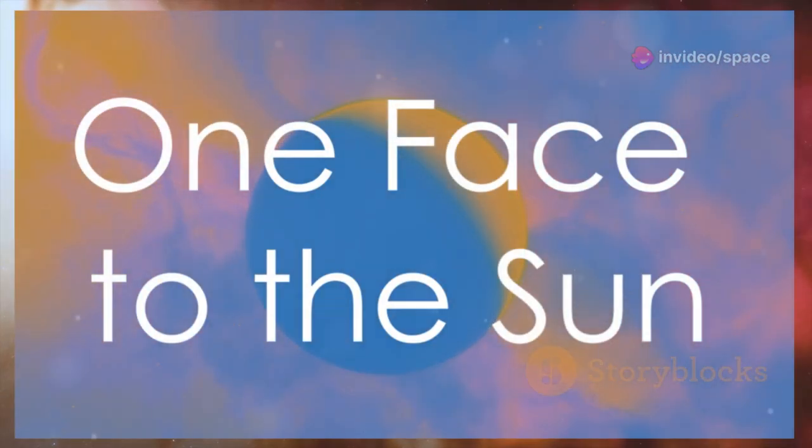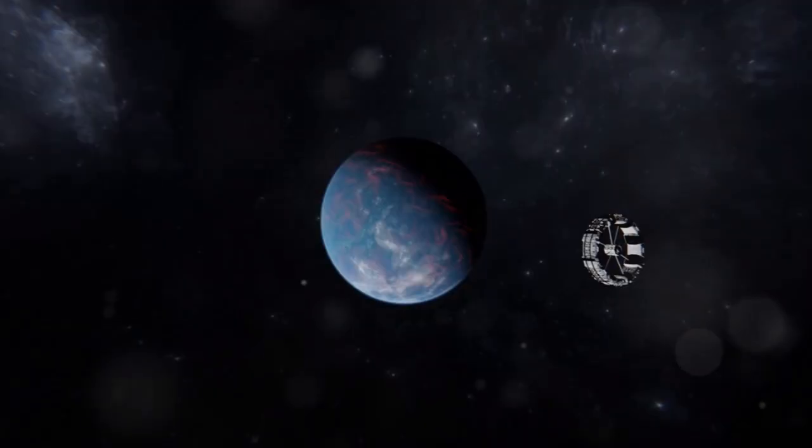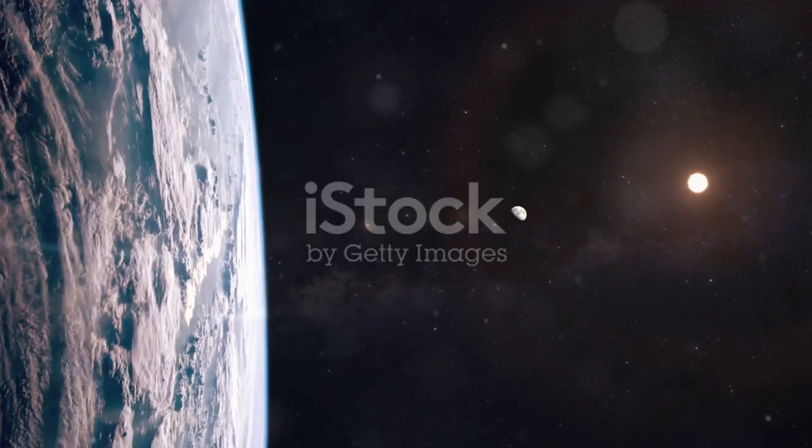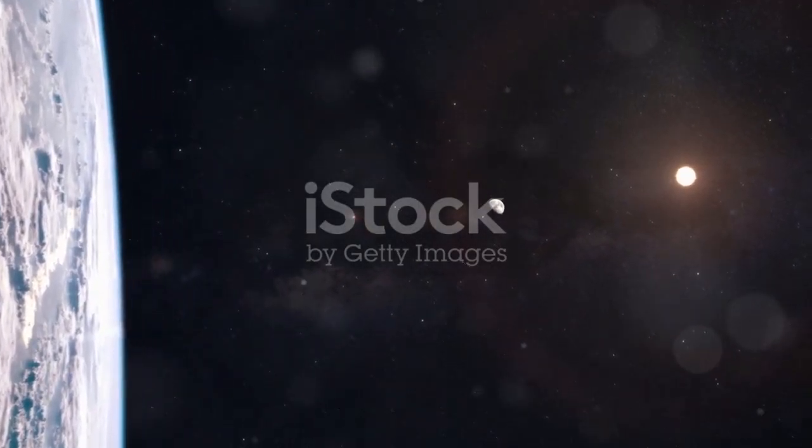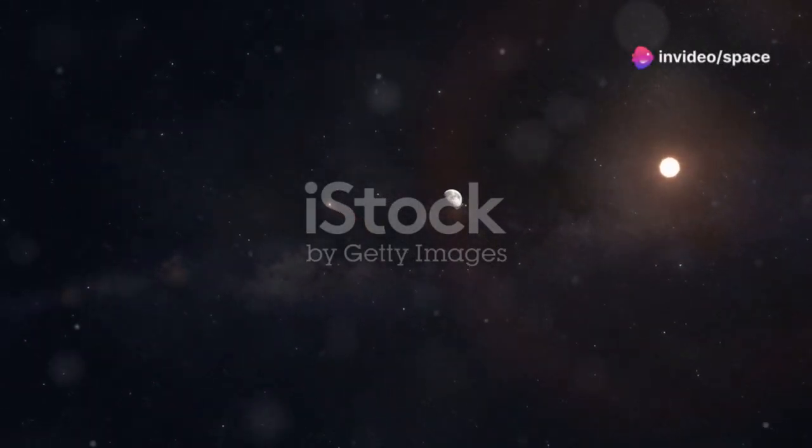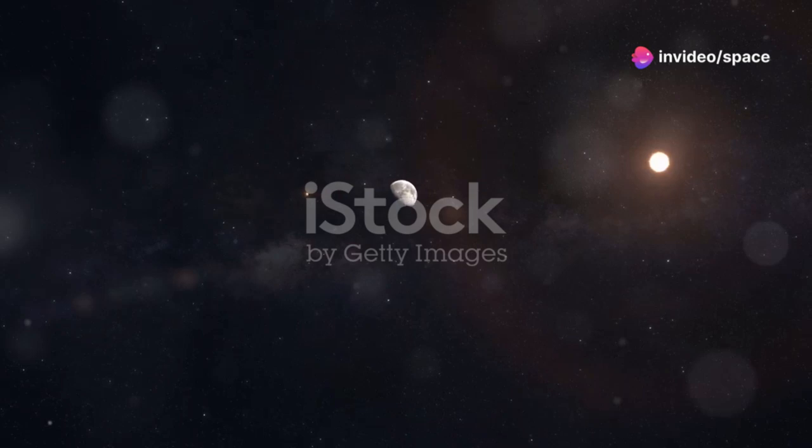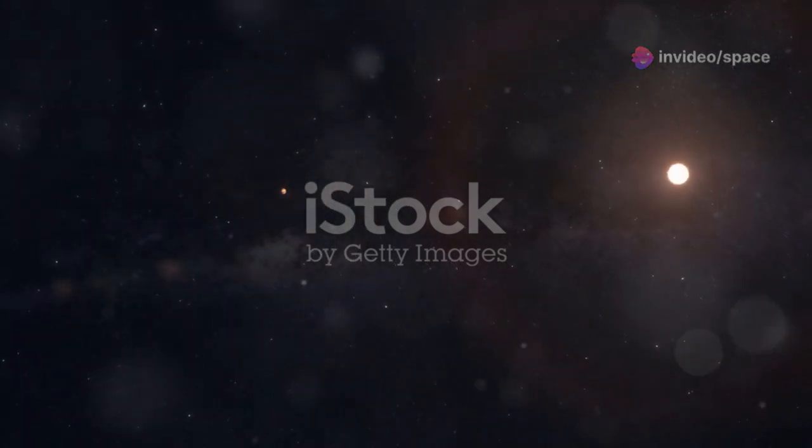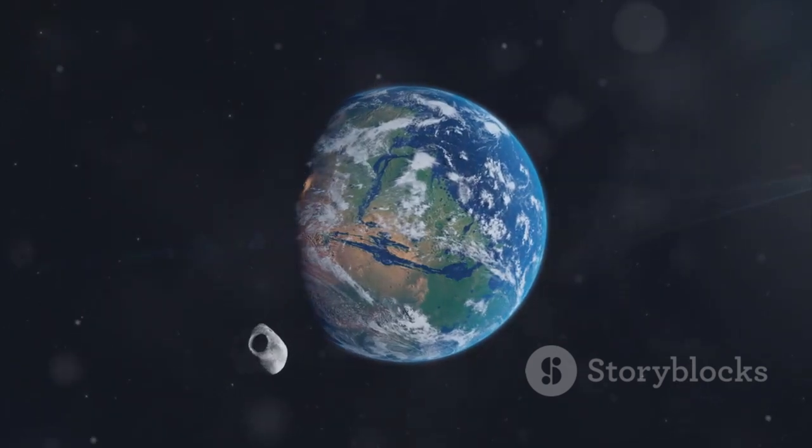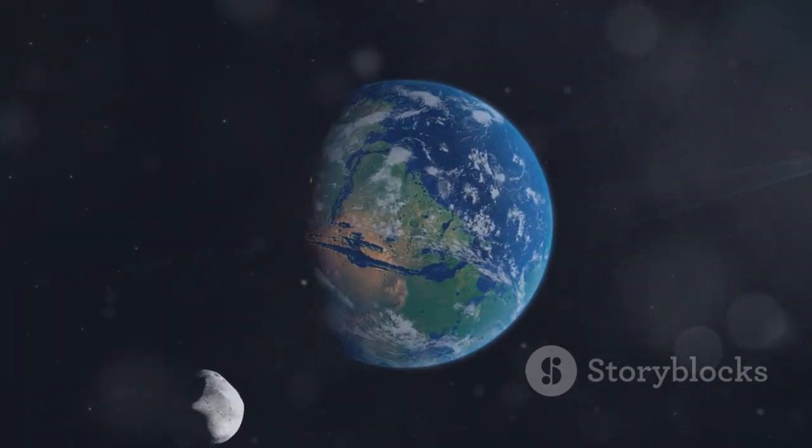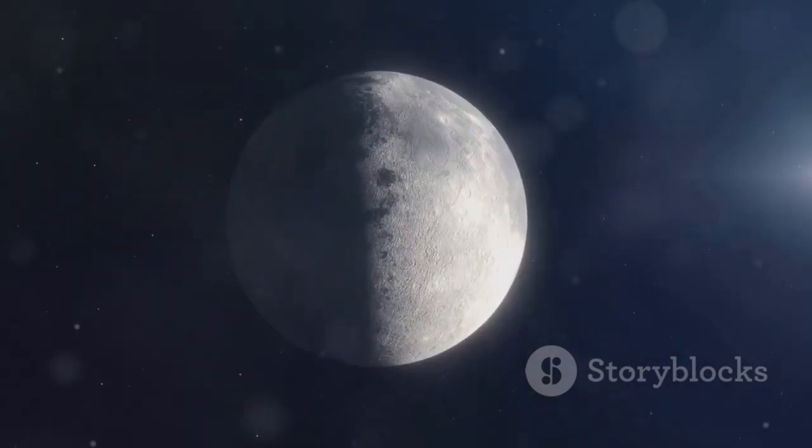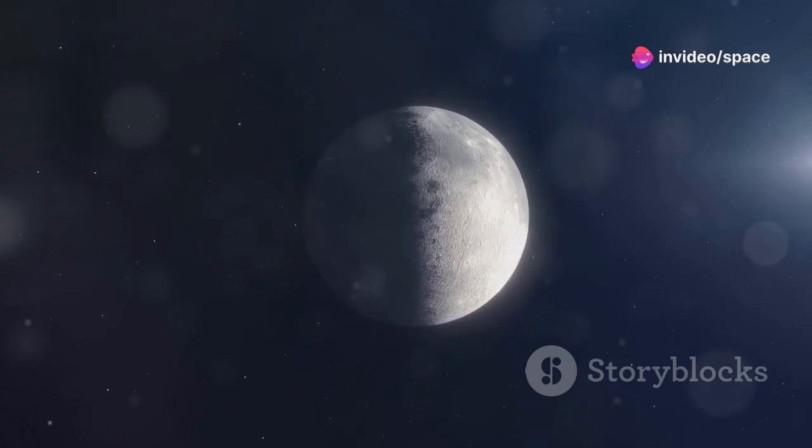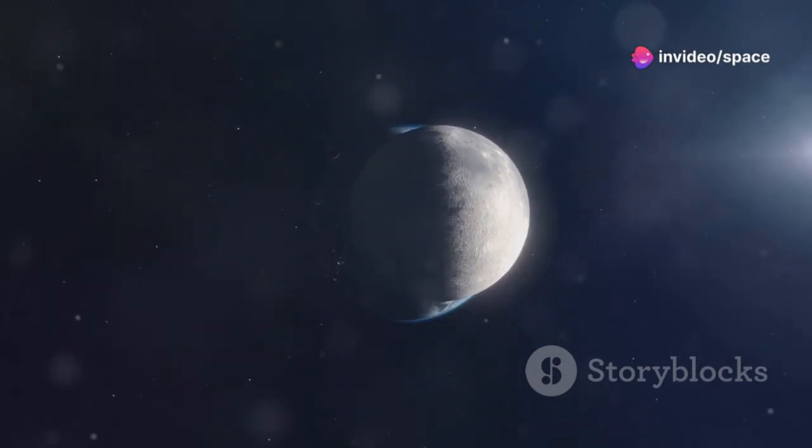Tidally locked, one face to the sun. Another consequence of Proxima b's close orbit is a phenomenon known as tidal locking. This occurs when the gravitational forces between a planet and its star cause the planet to rotate at the same rate that it orbits the star. This means that the same side of the planet always faces its star, just like how the same side of the moon always faces Earth. This results in one hemisphere of the planet being in constant daylight.